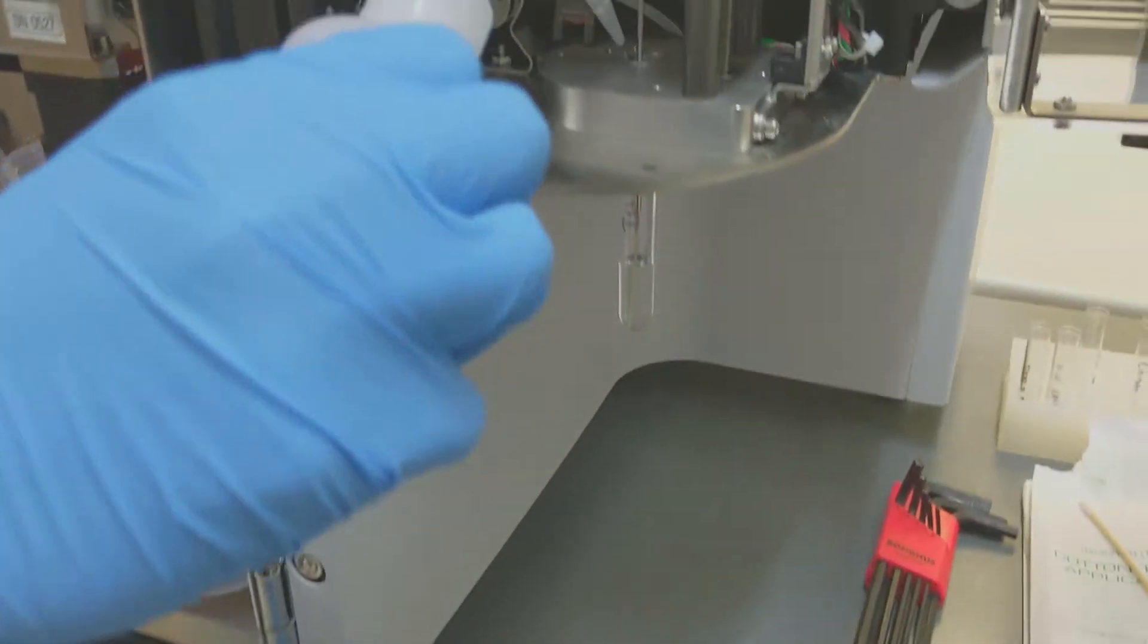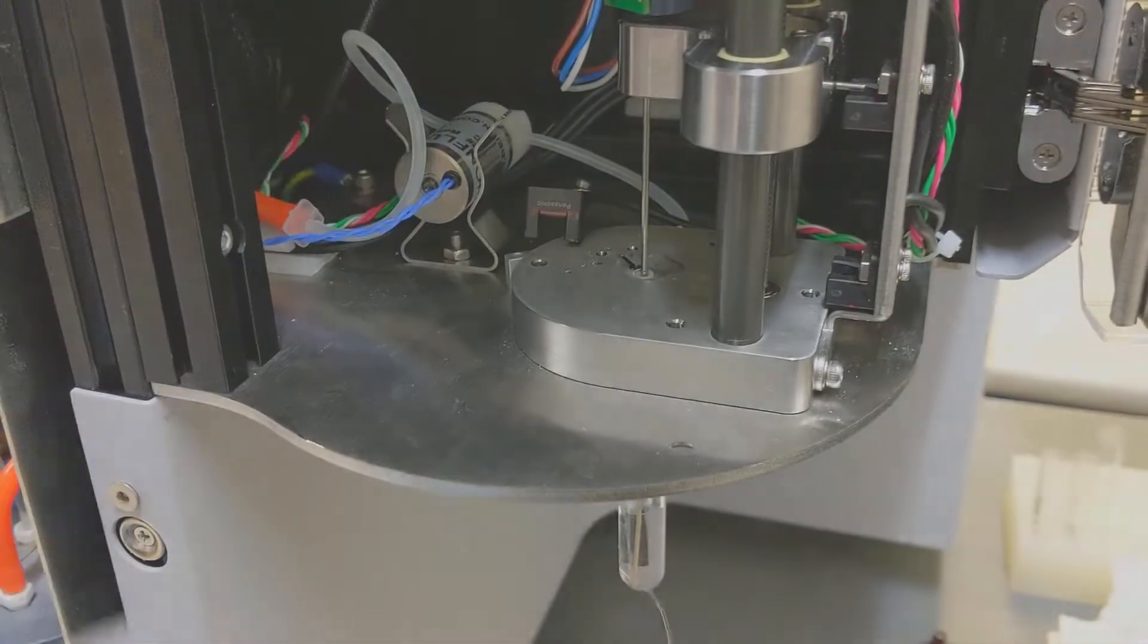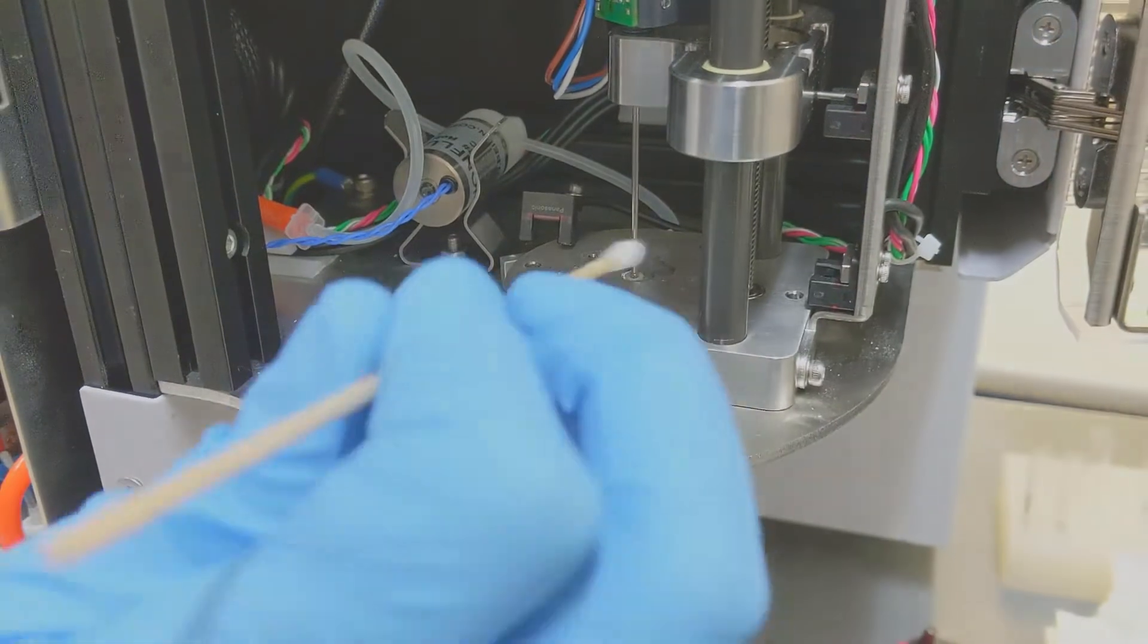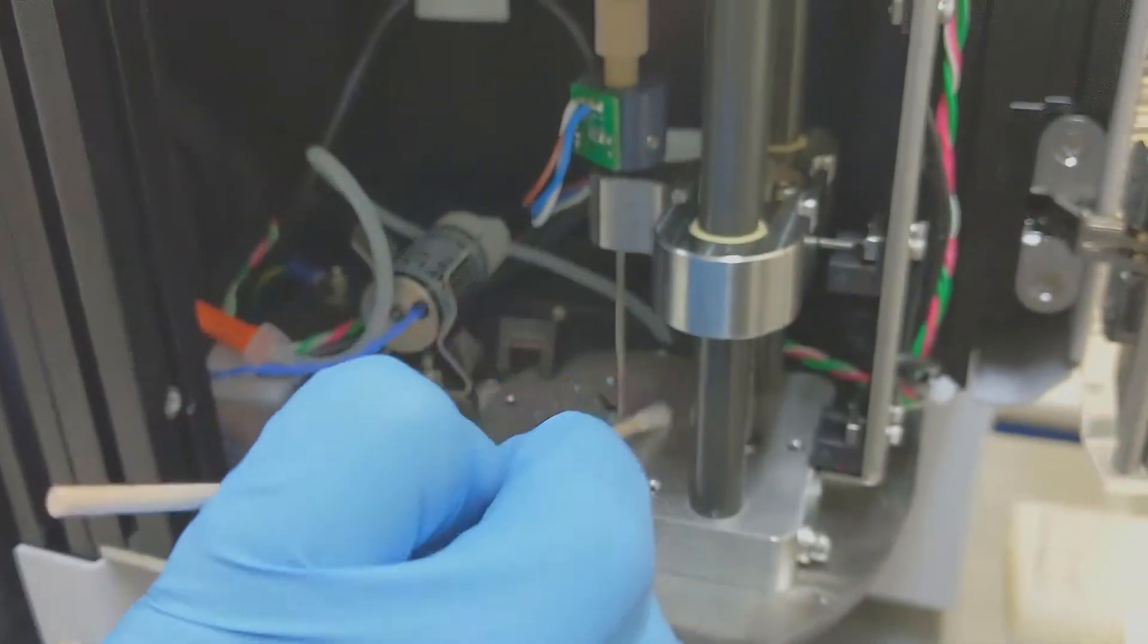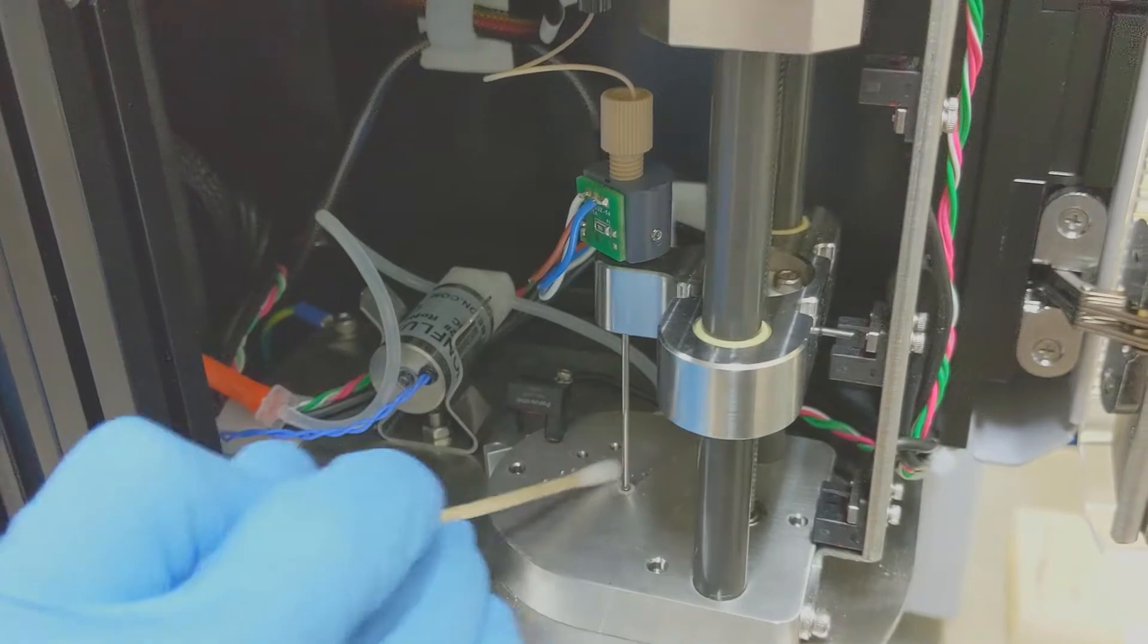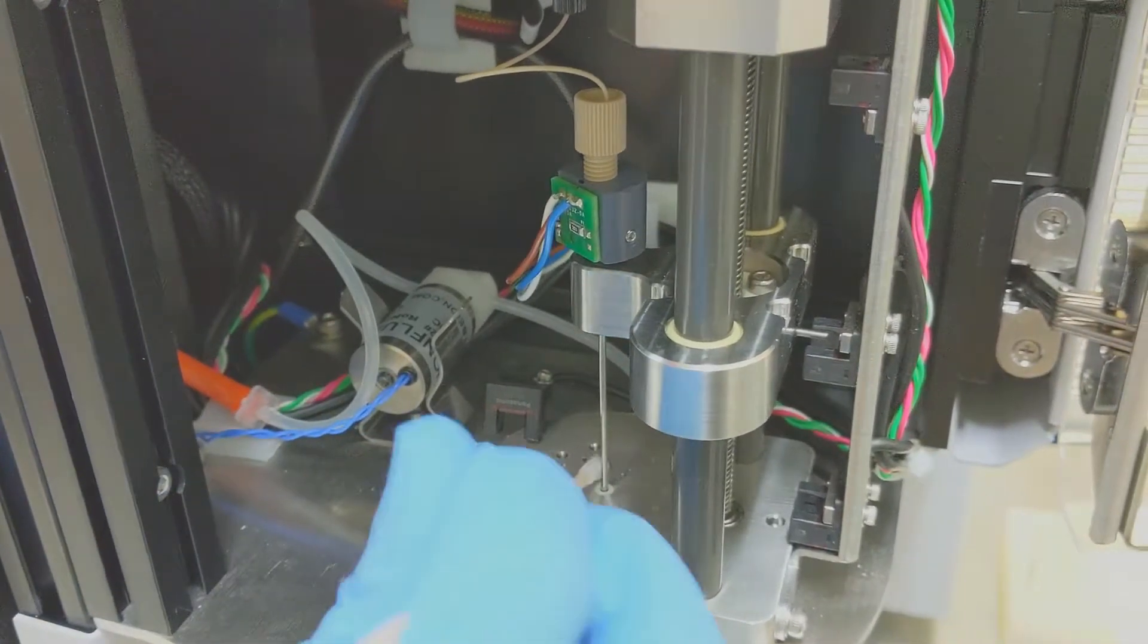Next grab your DI water and really wash the area really well. We want to flush out any salt crystals that might be up there and then you can dab up the salt and dirt with those cotton-tipped applicators.